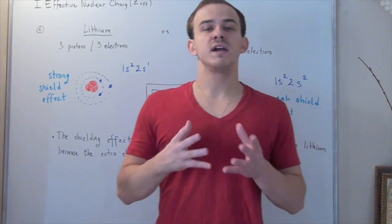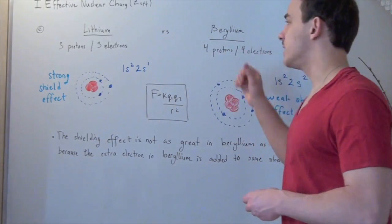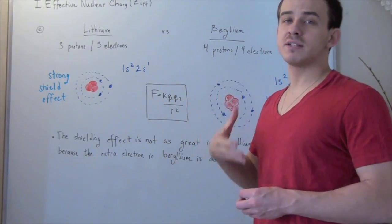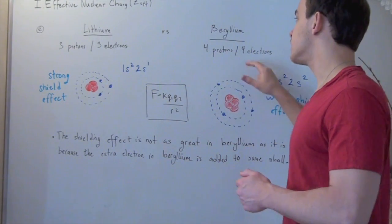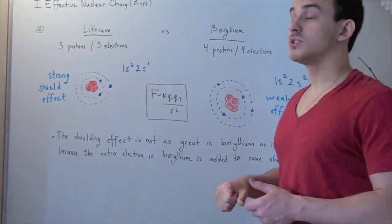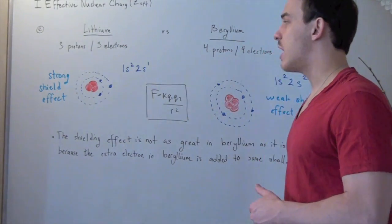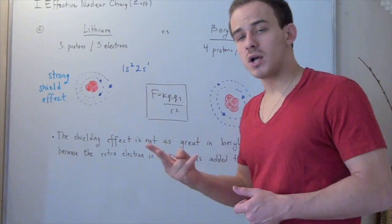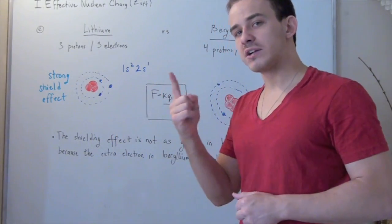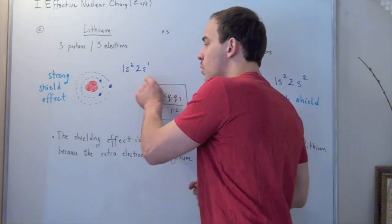Let's compare the effective nuclear charge of lithium and beryllium. Beryllium is one element to the right on the periodic table, meaning it has four protons and four electrons, while lithium has three protons and three electrons. In lithium, two electrons are found in the innermost 1s shell and one electron — because it only has three electrons total — is found in the outermost 2s shell.